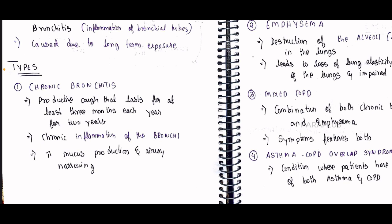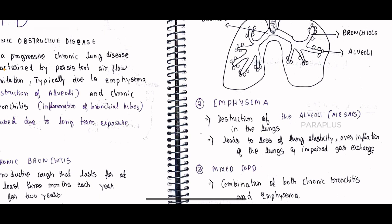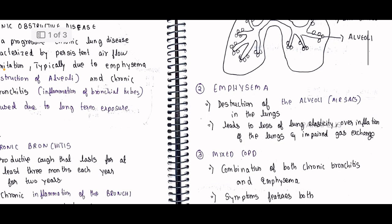The airway pipe is narrowing, and its shape and function are not proper. This leads to loss of lung elasticity, over-inflation of the lungs, and impaired gas exchange — affecting oxygen and CO2 exchange.